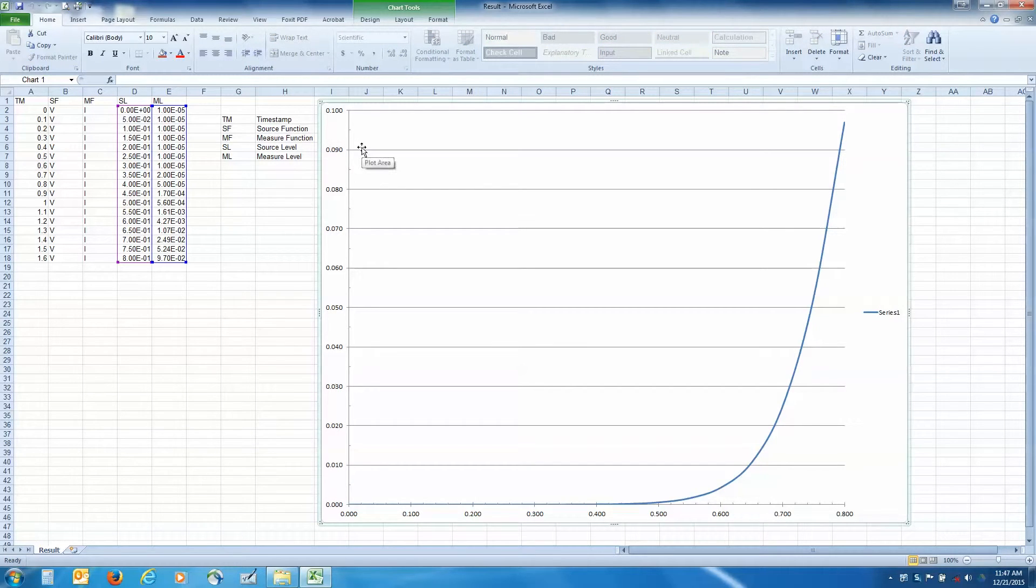Again, this is a silicon diode. You can see that as the voltage is swept from zero to approximately 0.8 volts, the current characteristically increases exponentially.